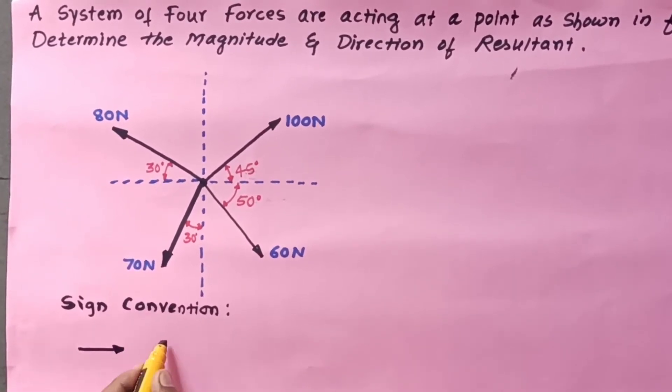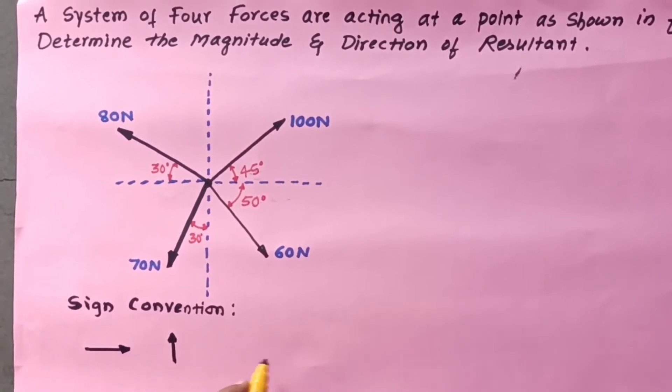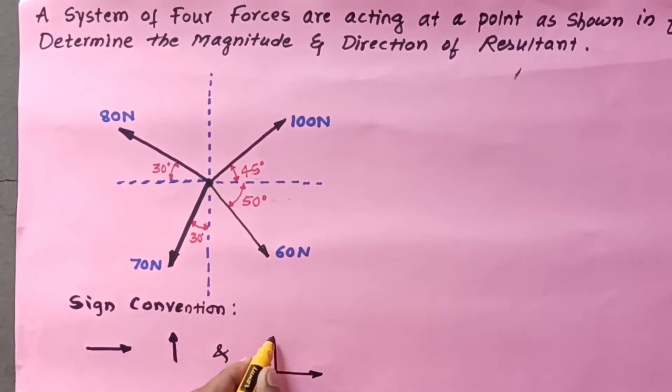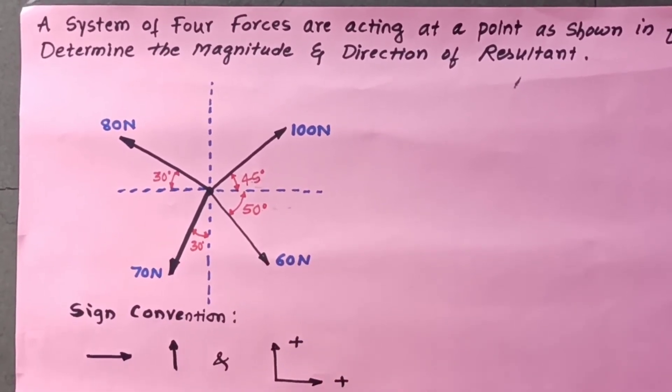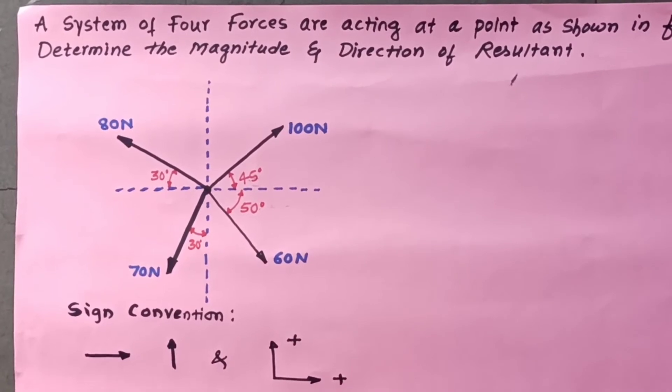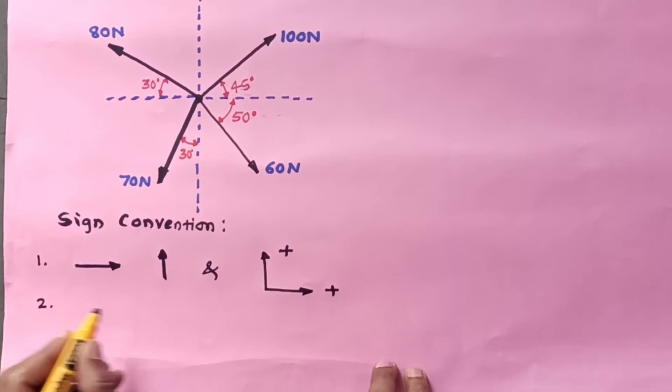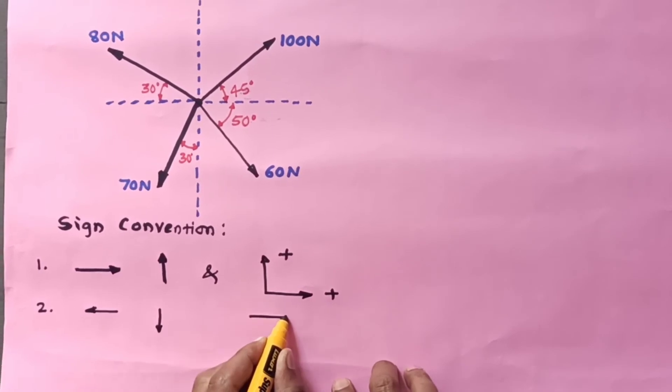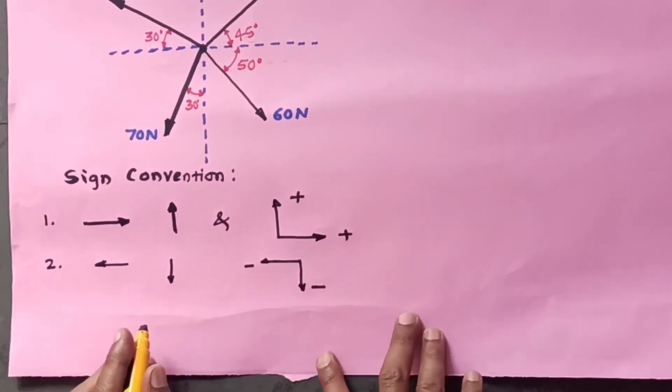First, forces acting towards the right side or upward, both vertical and horizontal, will be taken as positive. Forces acting towards the left side and downward will be taken as negative. We can explain this using a quadrant system.